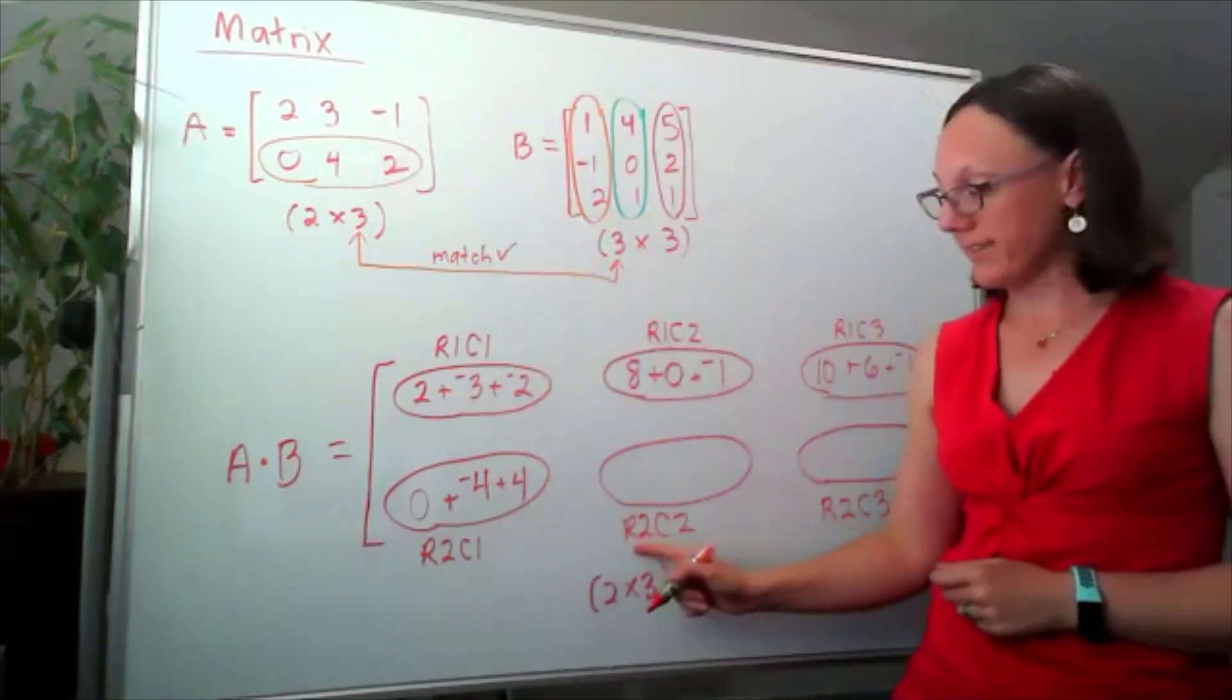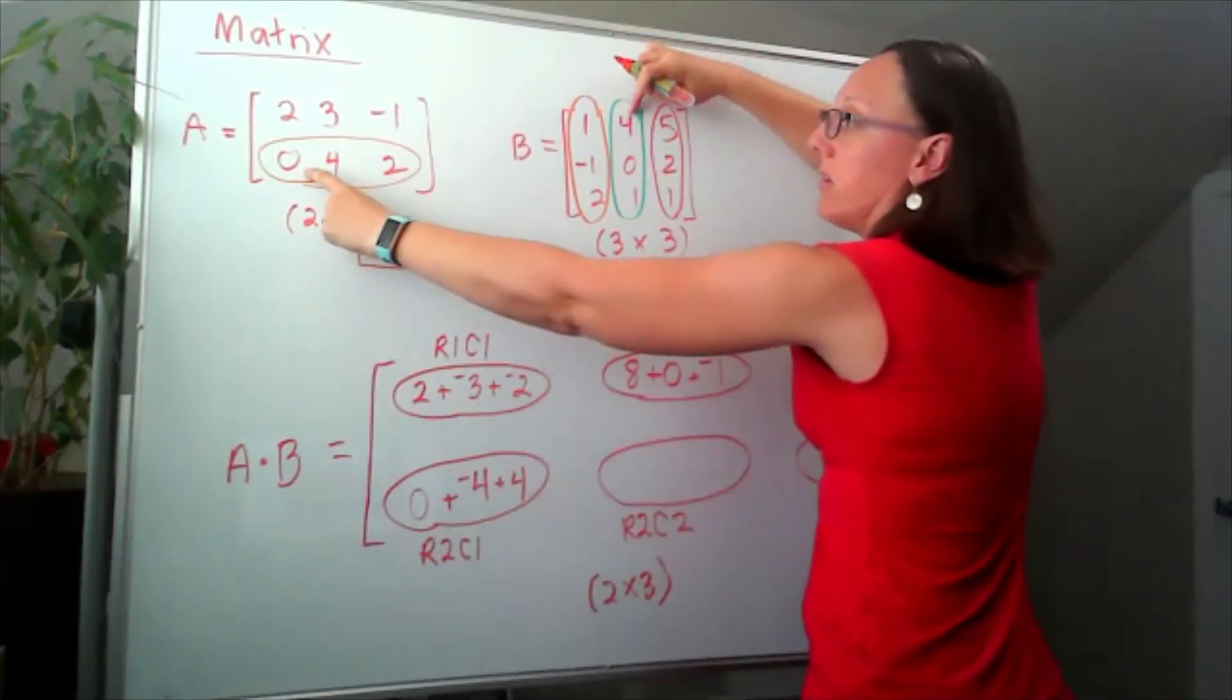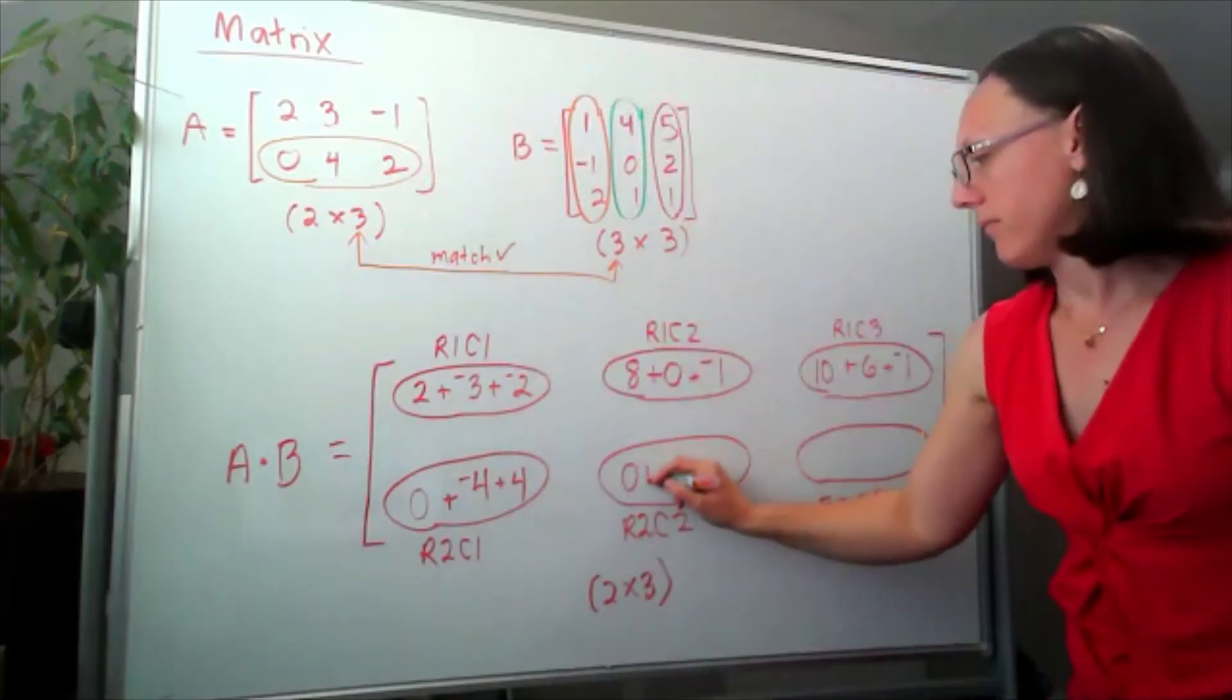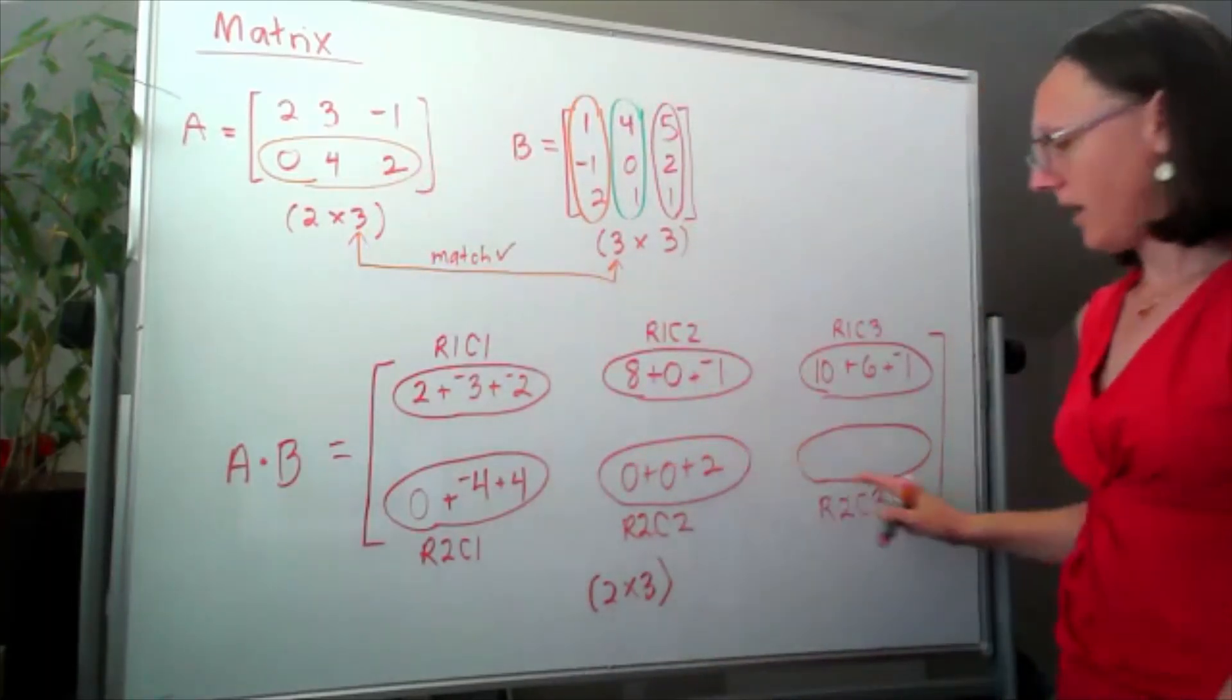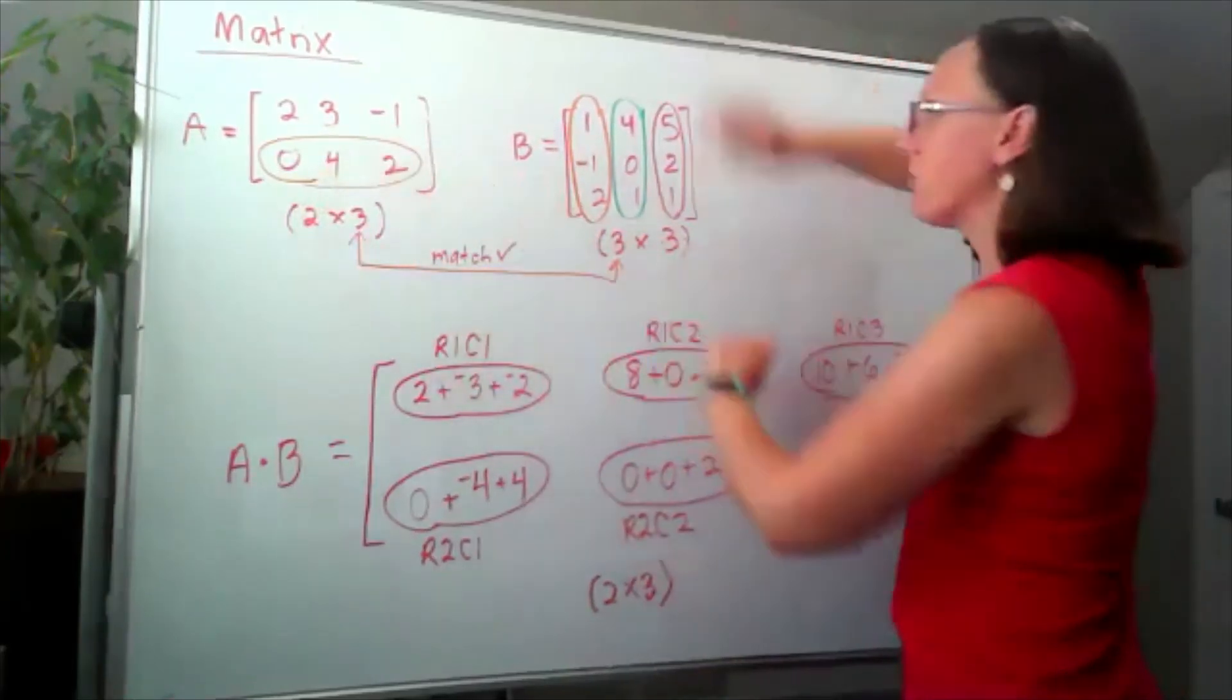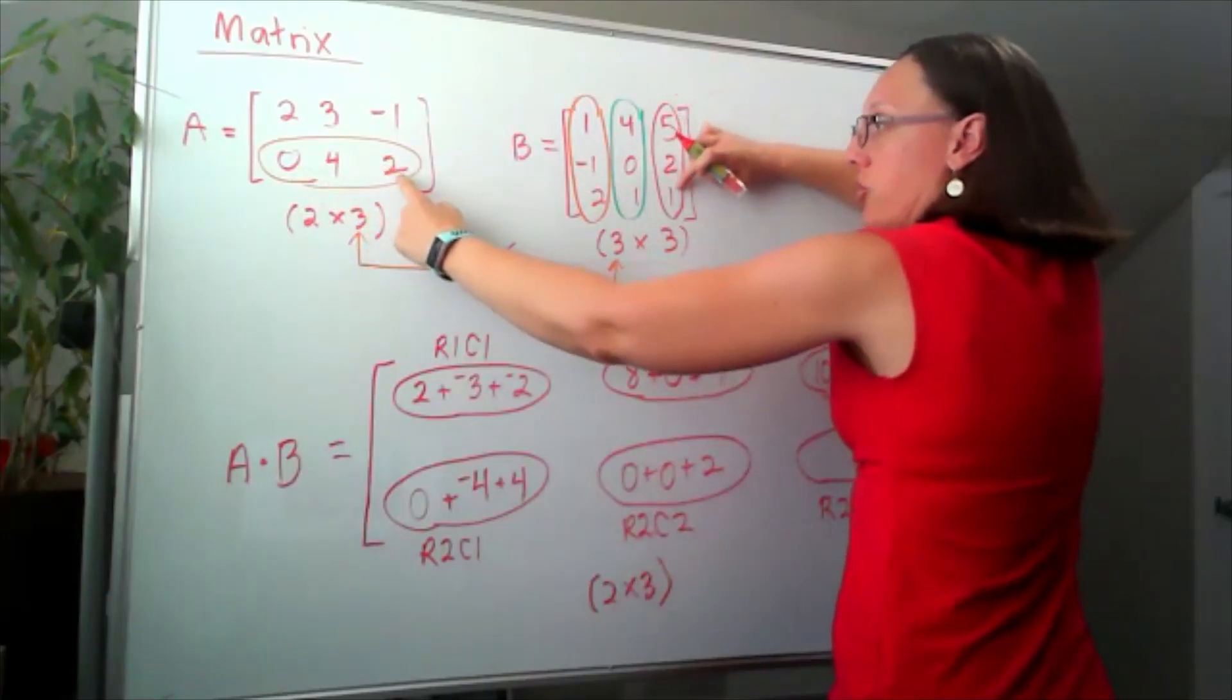Now I'm looking for the second row times the second column. I've got 0, 0, 2. And last row 2, column 3. Row 2, column 3. I've got 0, 8, 2.